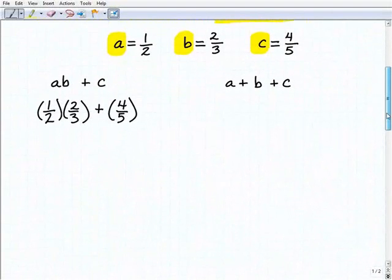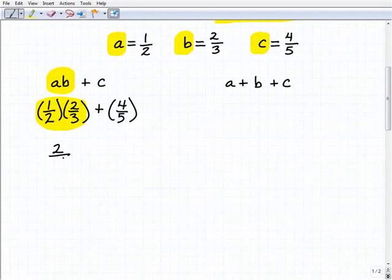So what do we do next? Well, this is just a quick review with order of operations. Remember, we're going to always do multiplication before we do addition. So we have to do this part first. So we're going to get one-half times two-thirds. So when we do this, this becomes two—I'm going to just multiply numerators and denominators. This is going to be one times two, or two, over two times three, which is six. Then we're going to add that to four-fifths.